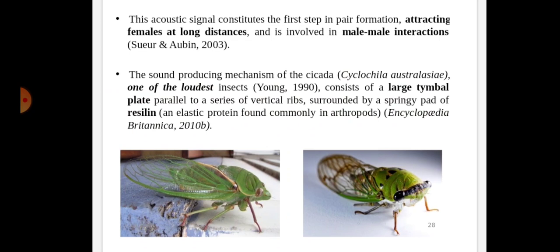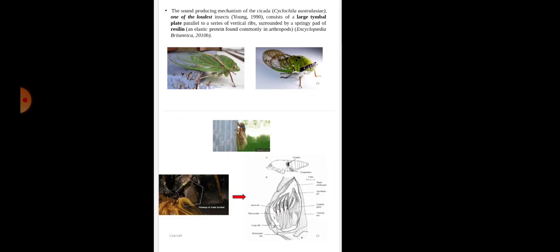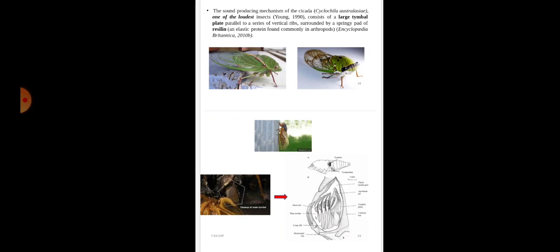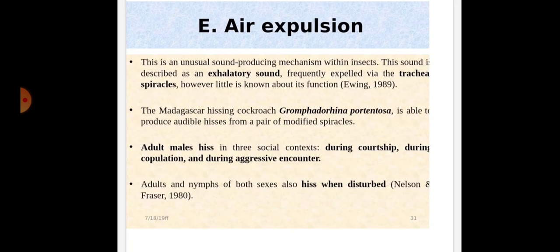The acoustic signal constitutes the first step in pair formation, attracting females at long distance and is involved in male-male interactions. The sound producing mechanism of the cicada, which is one of the loudest insects, consists of a large timbal plate parallel to a series of vertical ribs surrounded by a springy pad of resilin, which is an elastic protein found commonly in arthropods. You can see in the diagram the timbal organ of the cicada.